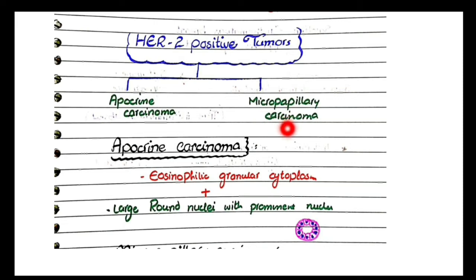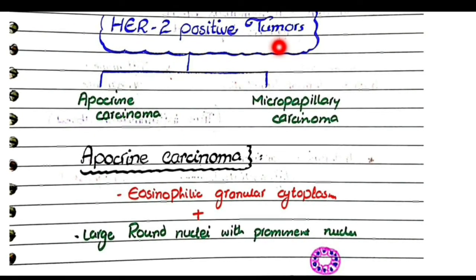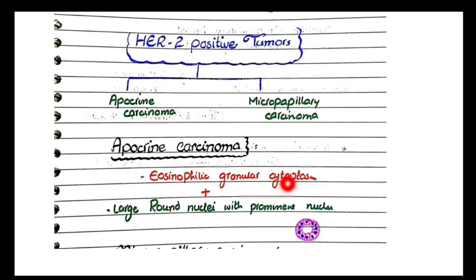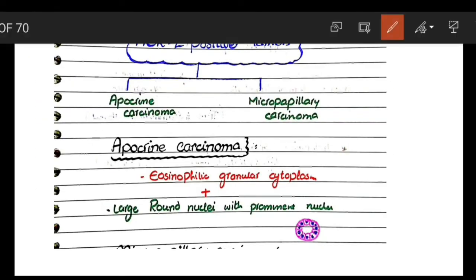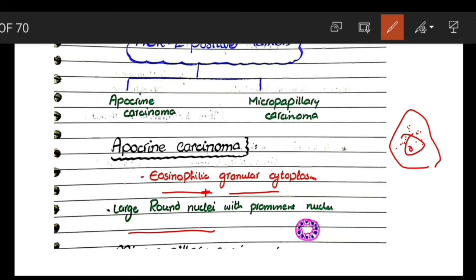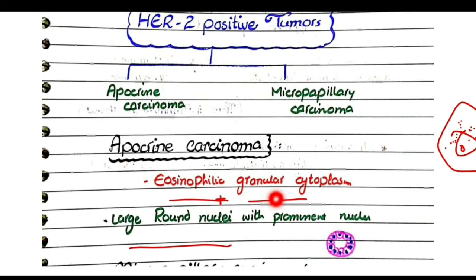Two important types of HER2 positive tumors are apocrine and micropapillary carcinomas. Apocrine carcinomas have eosinophilic granular cytoplasm and large round nuclei with a prominent nucleolus. The cells resemble apocrine cells of sweat glands, with abundant eosinophilic granules representing specialization in secretion and large round nuclei with prominent nucleolus.